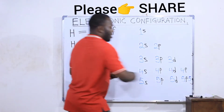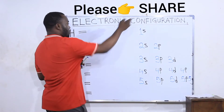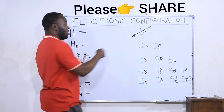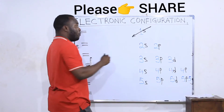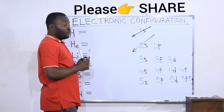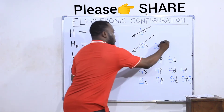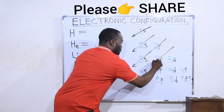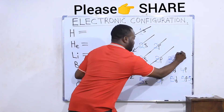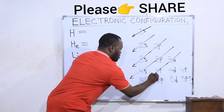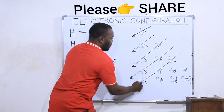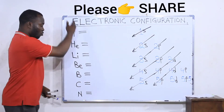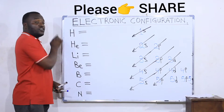After constructing the grid, draw a diagonal line cutting through it. The first orbital you fill is 1s; when 1s is filled, follow the diagonal to 2s; after 2s is 2p; after 2p is 3s; after 3s is 3p; after 3p is 4s; after 4s is 3d; after 3d is 4p; after 4p is 5s; after 5s is 4d, and so on.